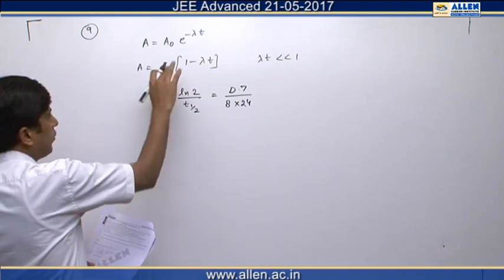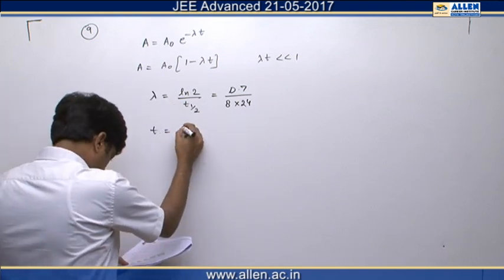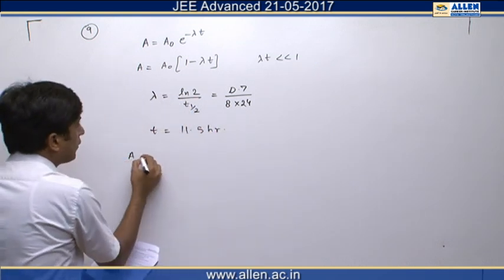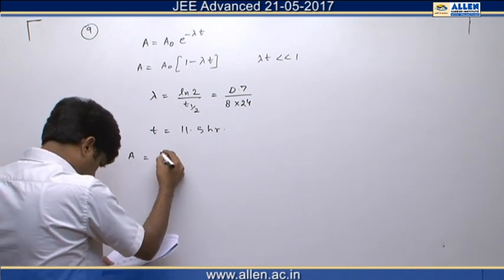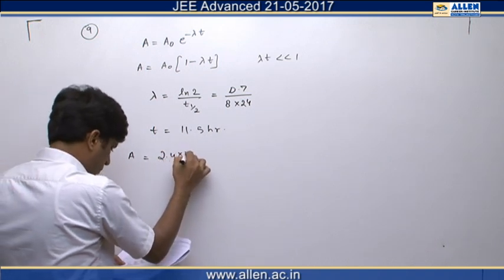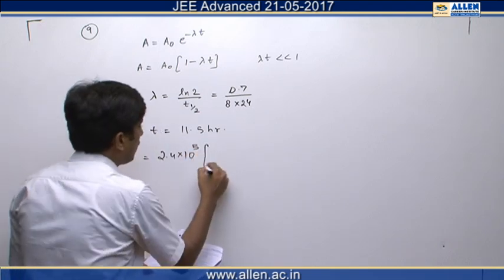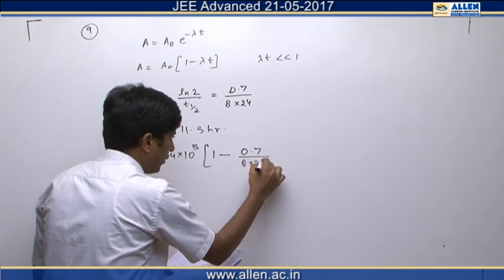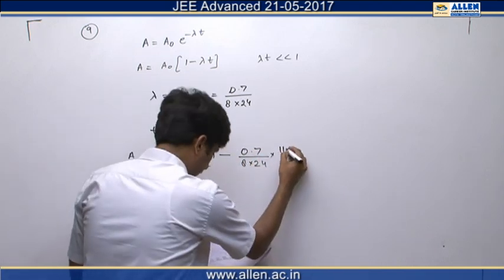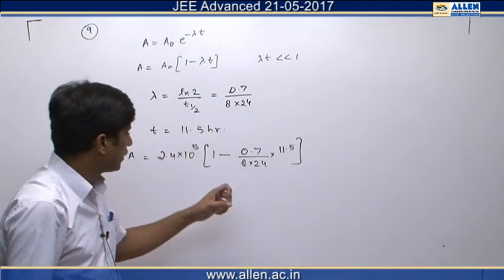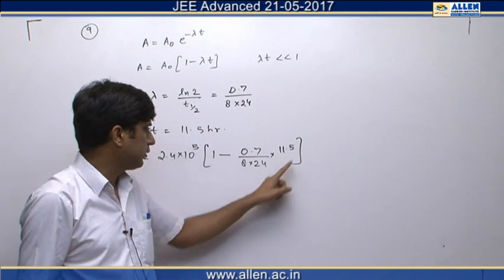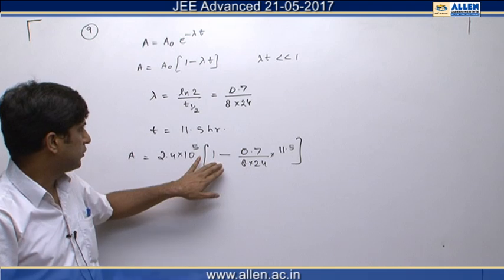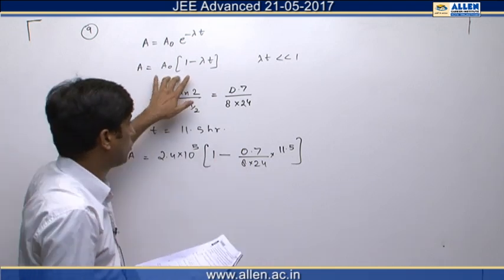Now we put in the value of lambda, which is 0.7 upon 8 into 24, and the value of time t is 11.5 hours. We get the value of A as A₀ equals 2.4×10⁵ becquerel, multiplied by 1 minus (0.7 divided by 8 into 24) into 11.5. This term is much smaller than 1, so we can use the binomial approximation.